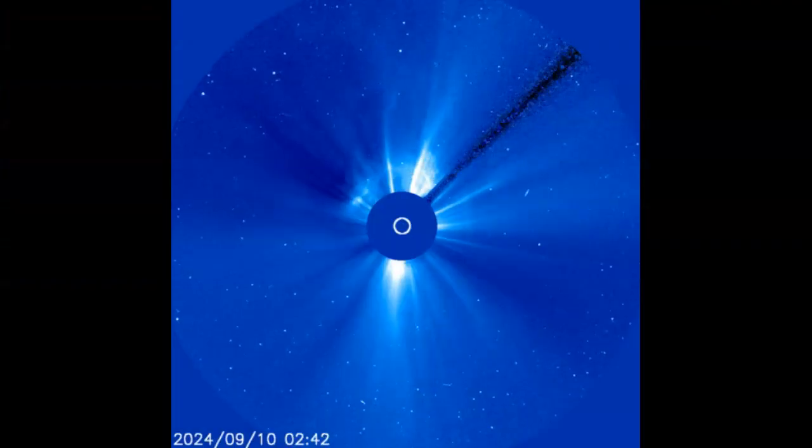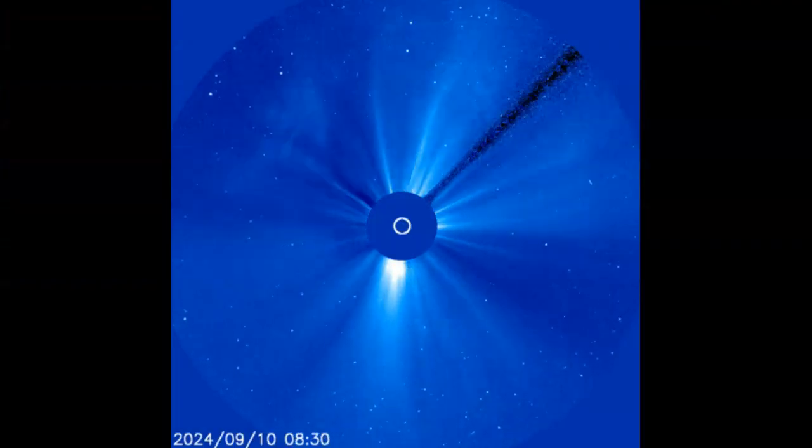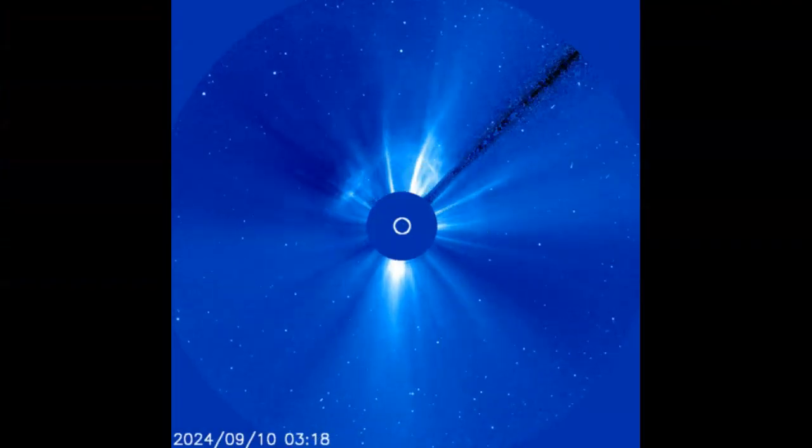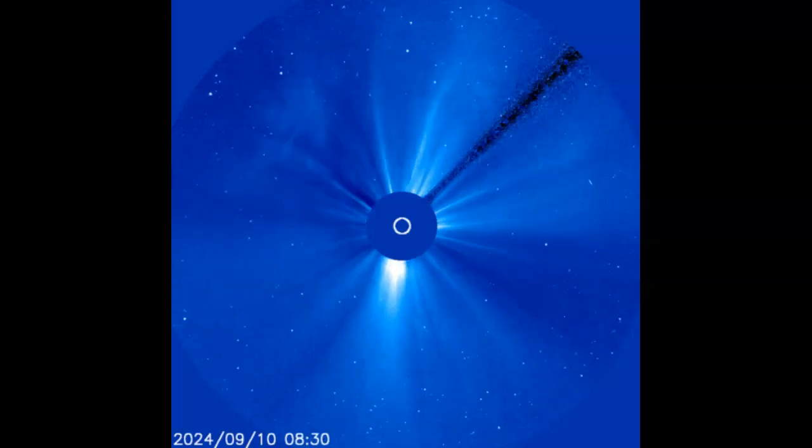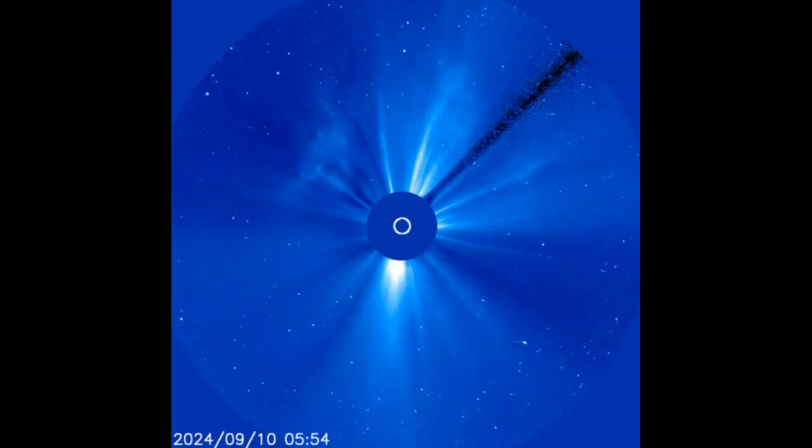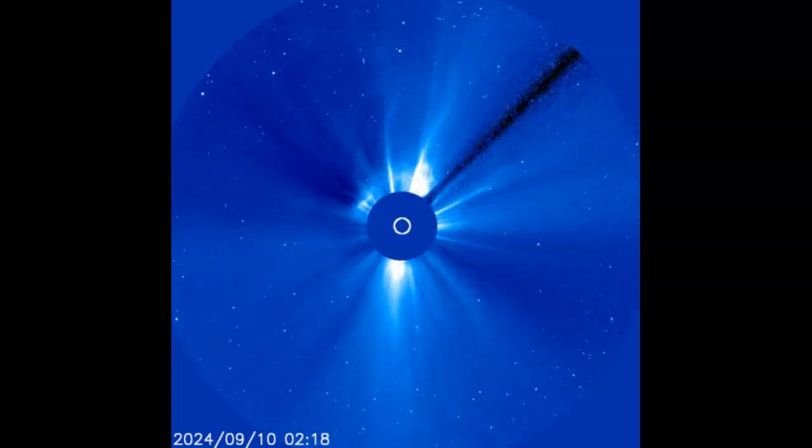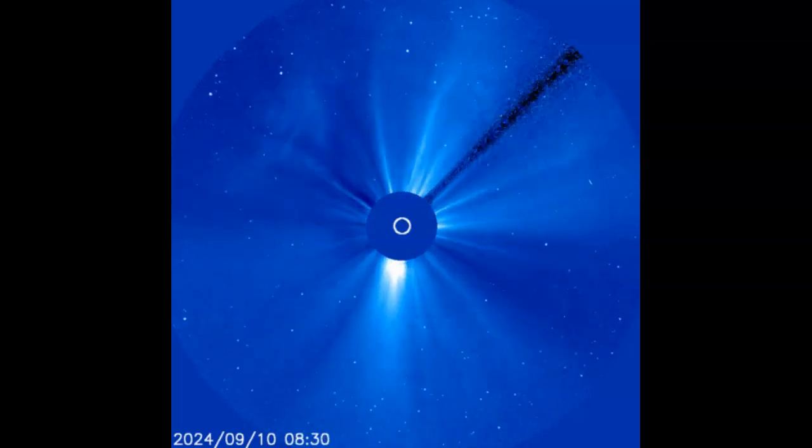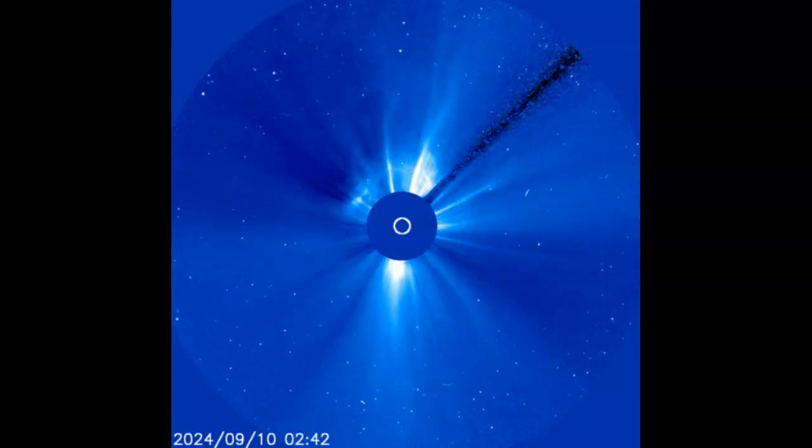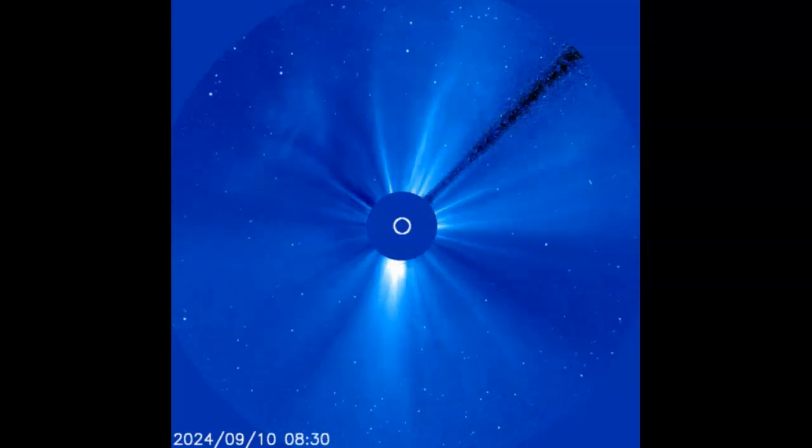SOHO chronographs detected a full halo coronal mass ejection moving directly towards Earth. A NASA model that we'll look at in just a moment suggests it will reach our planet during the late hours of September 12th.